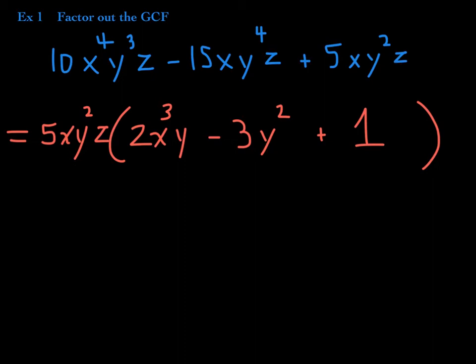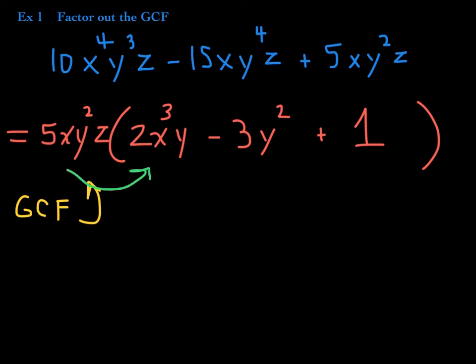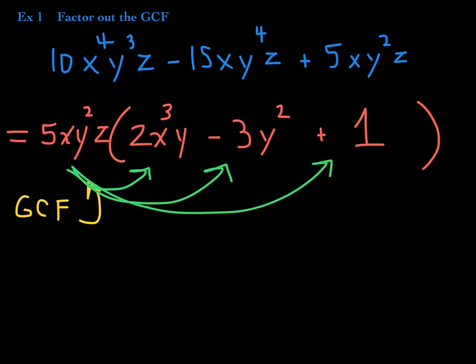So this is the trinomial fully factored. The GCF is 5xy²z — your greatest common factor. If you wanted to check your work, distribute this GCF back in and you will get the original polynomial back. That's how you can check every single time.